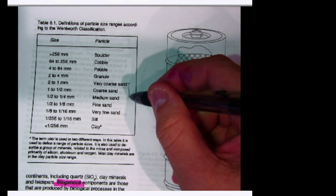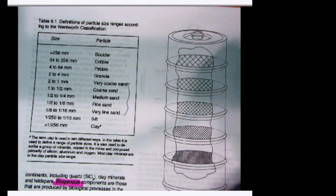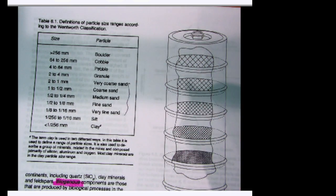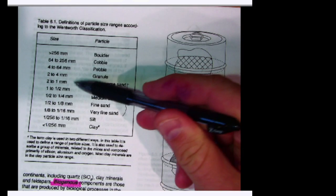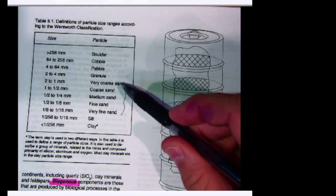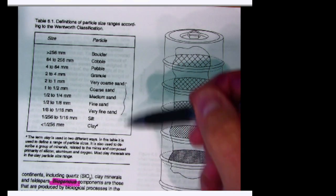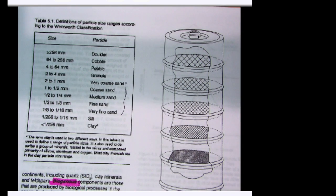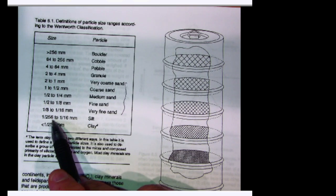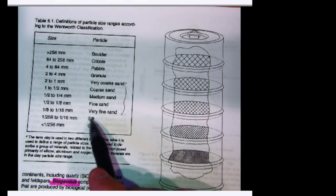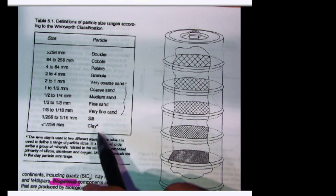Sand is a size class for geologists, not just a material. Beach sand can be made up of many different materials, but it's all sand because of its size range. Sand is divided into very coarse, coarse, medium, fine, and very fine. Below sand sizes — from 1/256 to 1/16 of a millimeter — you have silt-sized grains. Anything smaller than that is clay-sized.